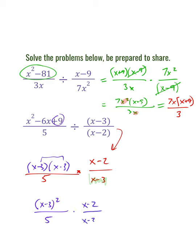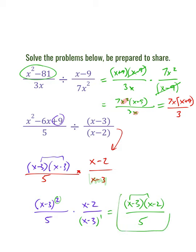I'll rewrite it as x minus 3 squared up front. We have one x minus 3 in the denominator but two in the numerator, so that leaves x minus 3 in the numerator along with x minus 2, all over 5. We could FOIL this to get x squared minus 5x plus 6, but we don't have to. We can leave our final answer as x minus 3 times x minus 2, all over 5.